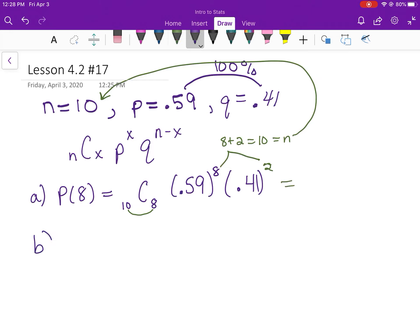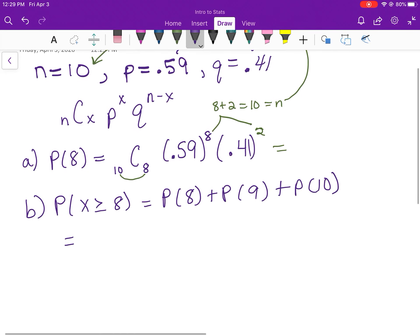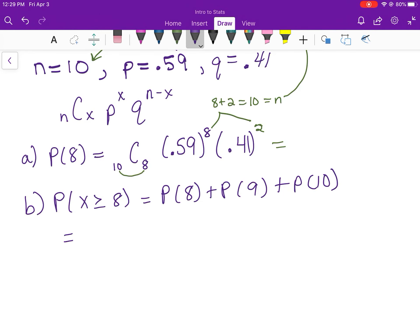Part B, at least 8. That means 8 or more, but of course we have to stay under 10 or less. So you can't go any higher than 10. So probability of 8 plus 9 plus 10. You already have the probability of 8 because you found that in part A.